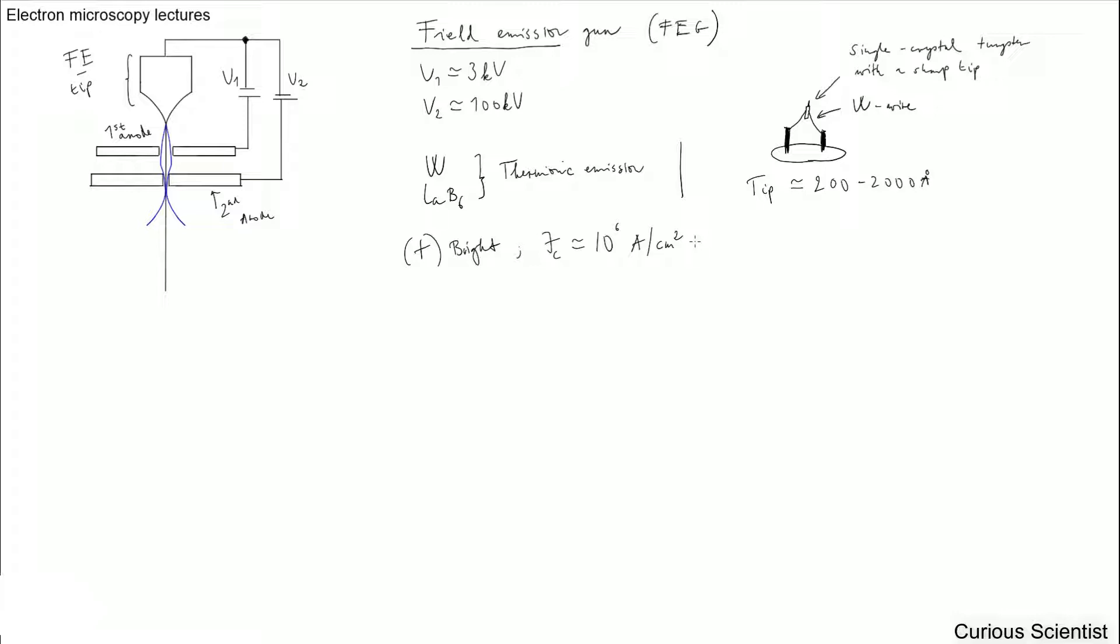And it's two orders of magnitude better than the lanthanum hexaboride tip. And the FEG can produce a focused spot smaller than 100 Å without any auxiliary lenses. So you don't need lenses and you already have very small spot size.